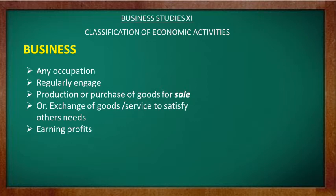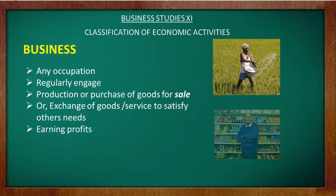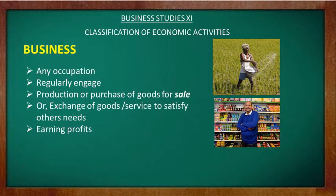Further, business is divided into two segments — first is industry and second is commerce. For example, a farmer doing farming and producing goods like rice or vegetables for selling them in a market to earn profit is considered a business. Similarly, a shopkeeper procuring goods for selling them at a profit is also considered an economic activity under business.